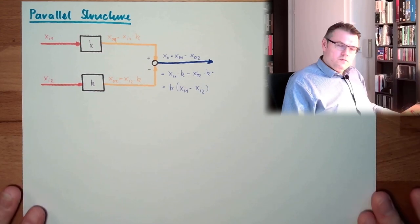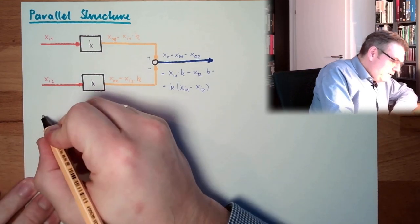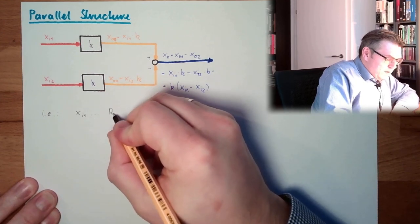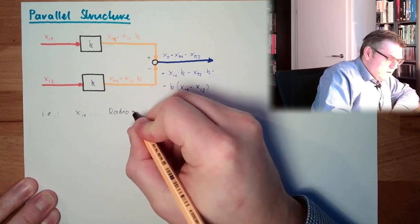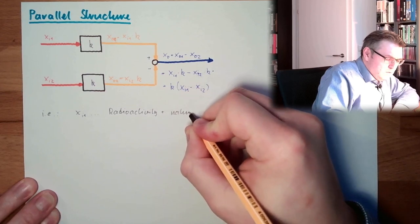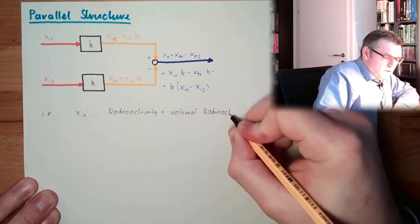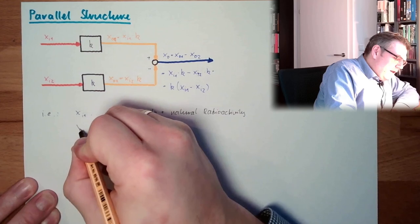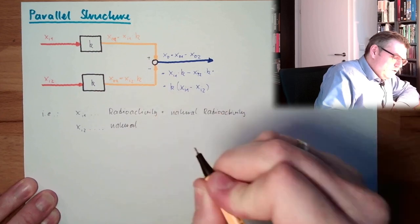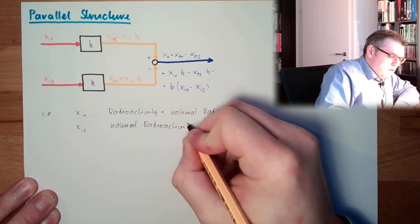So what to do? I could use this possibility. In an example, XI1 is radioactivity plus natural radioactivity, and XI2 is only natural radioactivity.